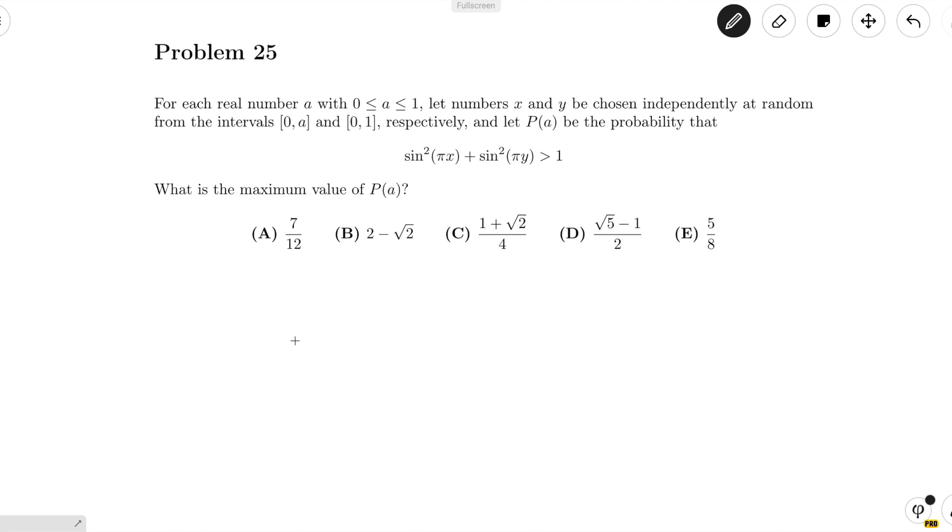The problem reads: for each real number a with 0 ≤ a ≤ 1, let numbers x and y be chosen independently at random from the intervals [0,a] and [0,1] respectively, and let P(a) be the probability that sin²(πx) + sin²(πy) > 1. What is the maximum value of P(a)?